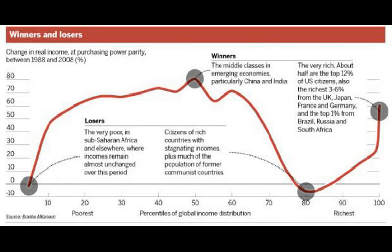Here we have what is called the Globalization Elephant Graph. It's called such because of its shape — it looks like an elephant with its trunk raised in the air. What information the chart is showing us is changes in real income from 1988 to 2008. Groups that had the lowest income to start with are shown on the left, and as you move to the right, you reach wealthier groups of people.